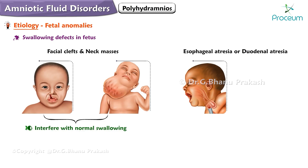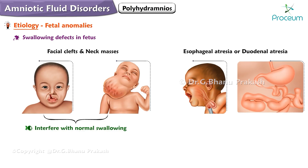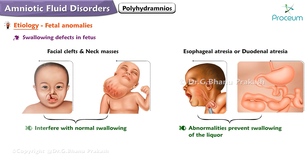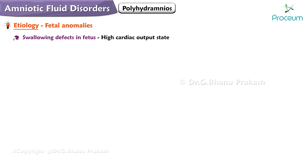Esophageal or duodenal atresia are abnormalities that prevent the swallowing of liquor. A high cardiac output state in the fetus causes more urine output, and thus polyhydramnios.